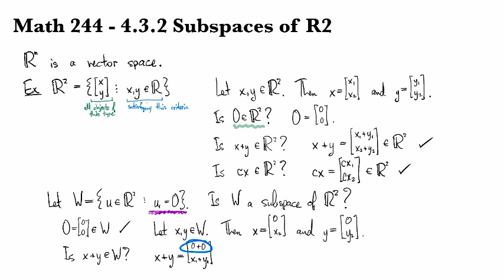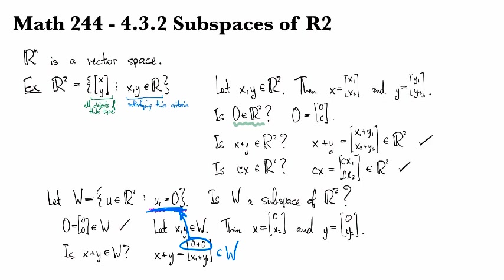Having a 0 in the first coordinate is exactly the condition that allows you to be in the set. So, yes, this guy is in w because it satisfies this condition.